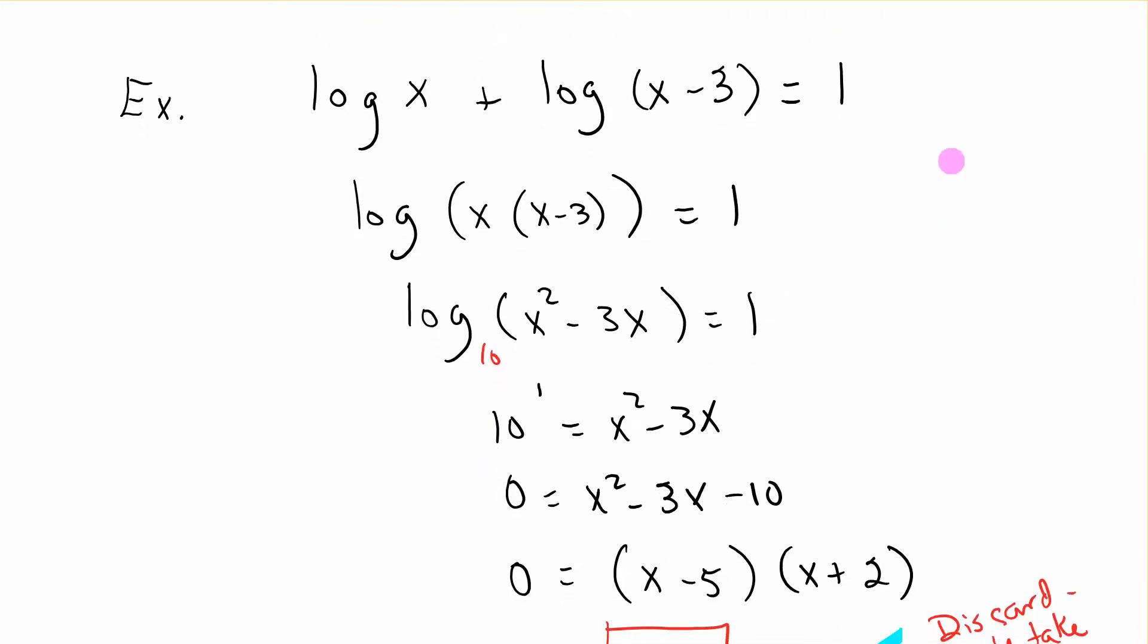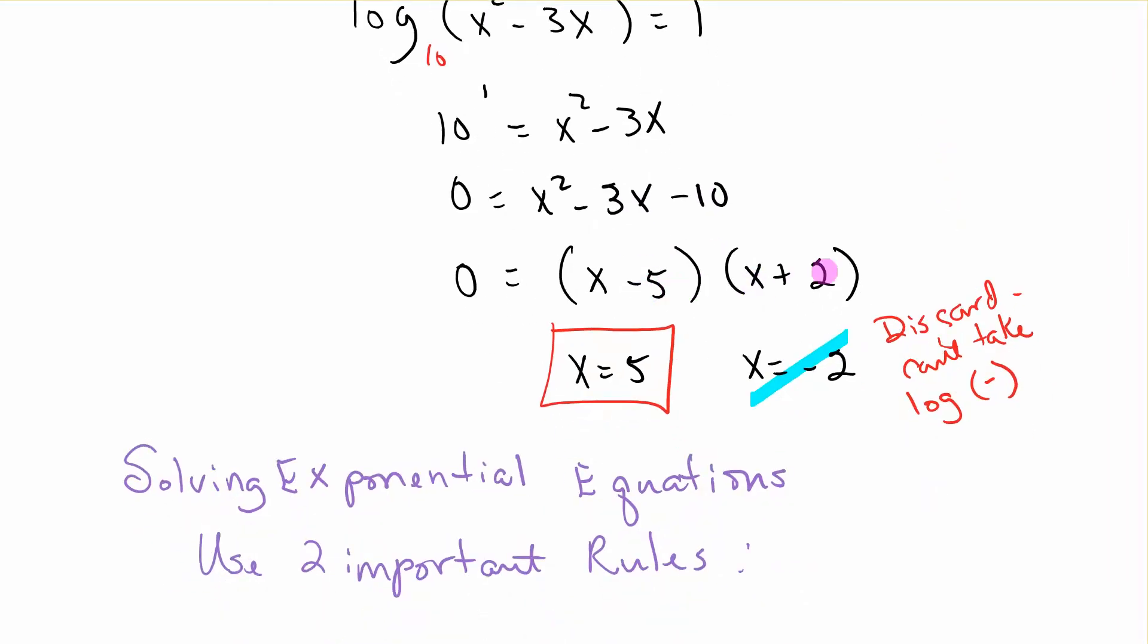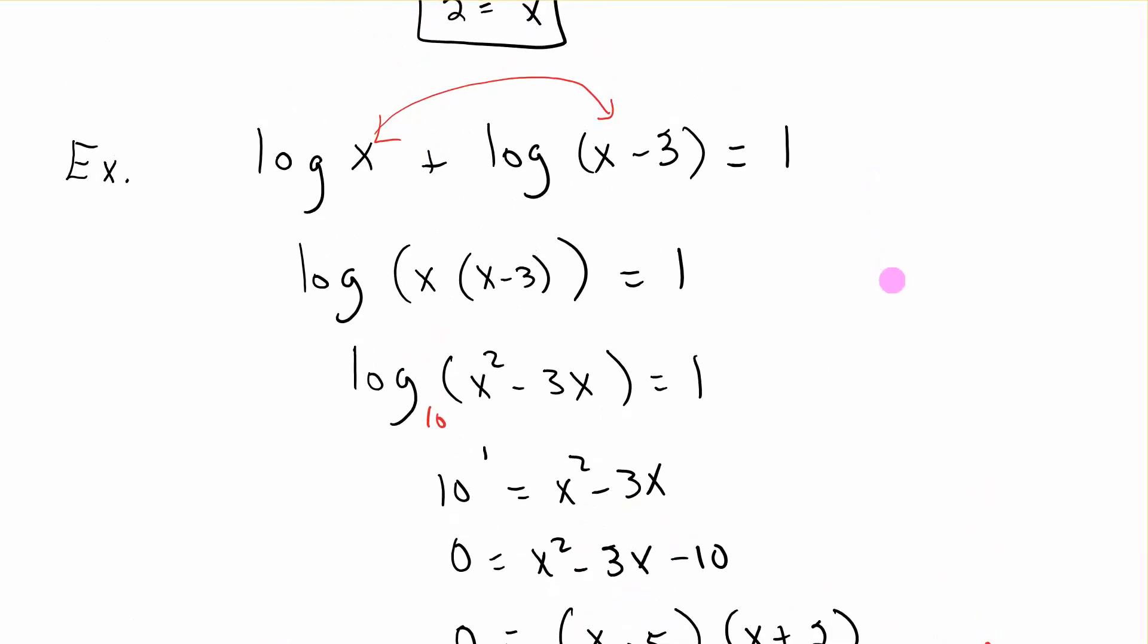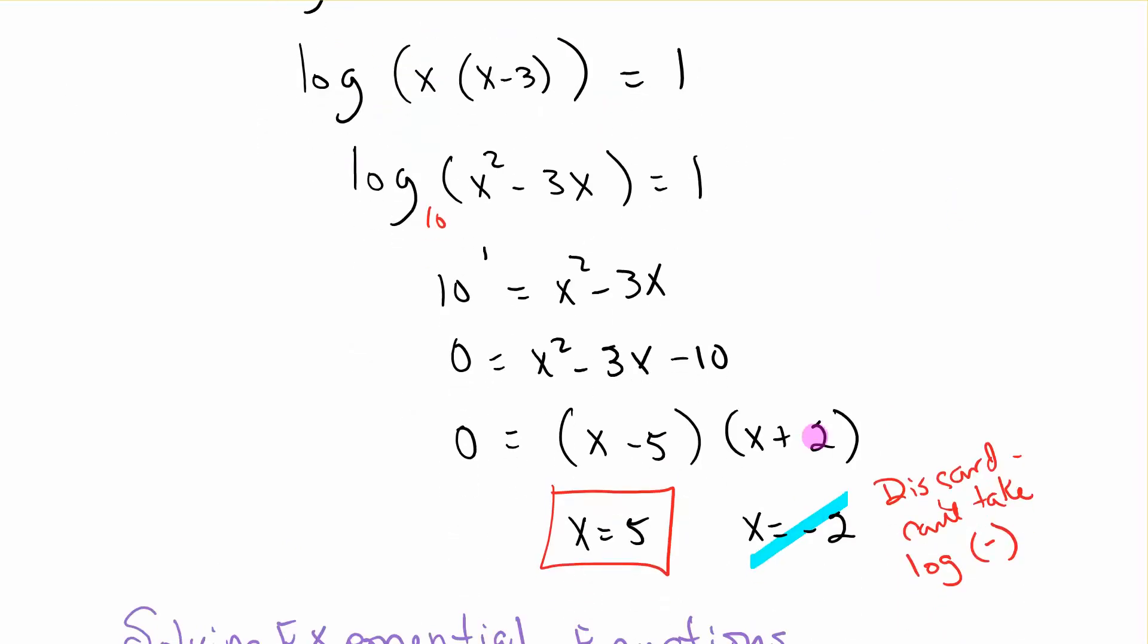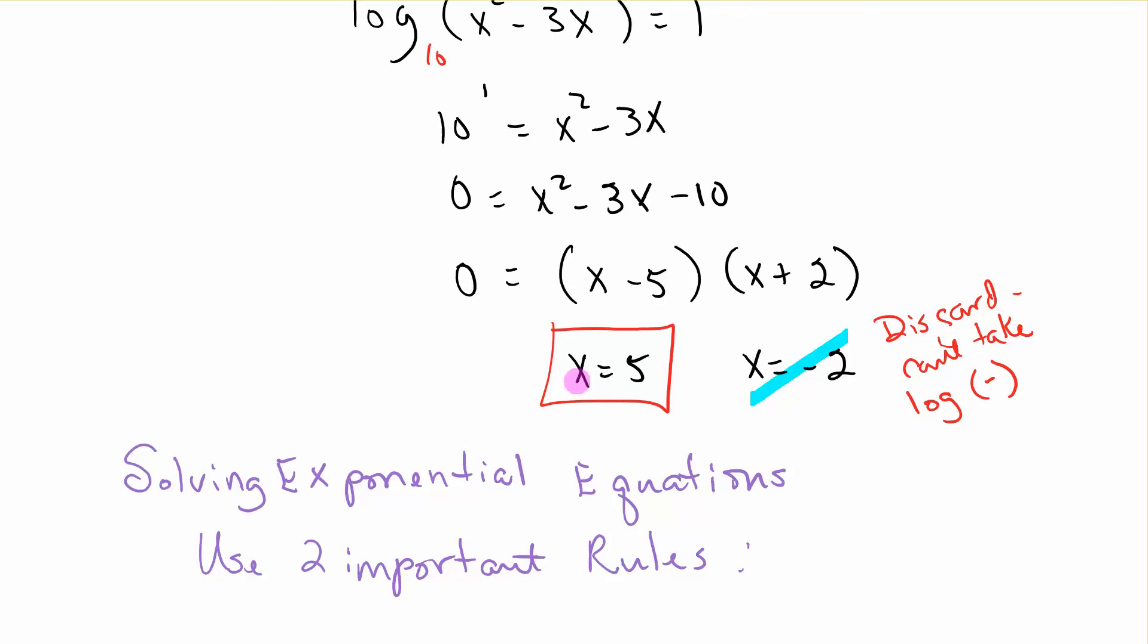Let's try this one. We want to combine those into a single log and that means we'll have log of this product, these two. We have an understood base of 10. So that's the log of x squared minus 3x. When I switch it to exponential, 10 to the 1st equals x squared minus 3x. Then I'm going to subtract the 10. That gives me x squared minus 3x minus 10. Factor that to x minus 5, x plus 2. That gives me x equals 5 and x equals negative 2. Let's look back in our original. We're taking the log of x. If I plug in negative 2, I would be taking the log of a negative number. I can't do that. So I discard that one and my only solution is x equals 5.